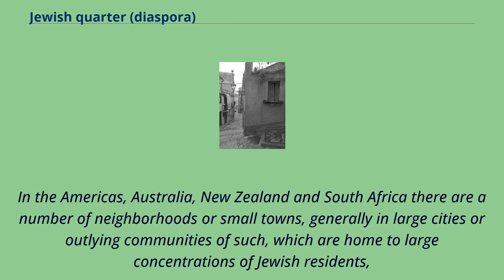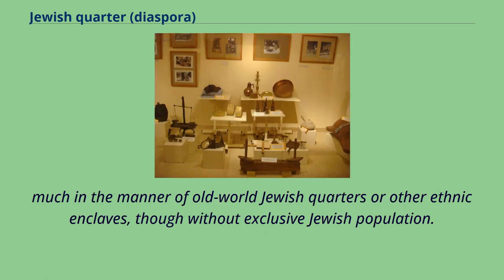In the Americas, Australia, New Zealand and South Africa there are a number of neighbourhoods or small towns, generally in large cities or outlying communities of such, which are home to large concentrations of Jewish residents, much in the manner of Old World Jewish quarters or other ethnic enclaves, though without exclusive Jewish population.